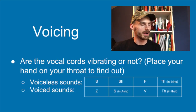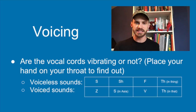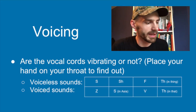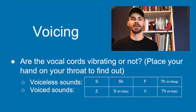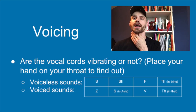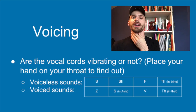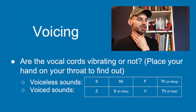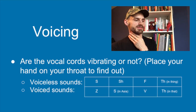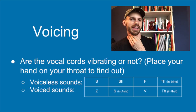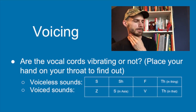The first criterion is voicing, and we're going to go over this first because it's the easiest to understand. Voicing means: are your vocal cords vibrating? The way to tell is very easy — take your hand and put it right on your throat on your Adam's apple, and you'll be able to feel your vocal cords vibrating. Let's go through some sounds listed as voiceless: s, sh, f. Did you feel your vocal cords vibrating when you did that?